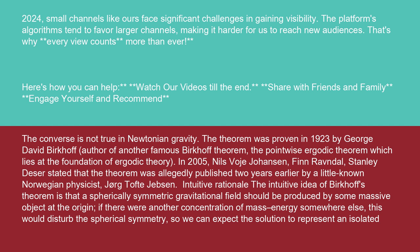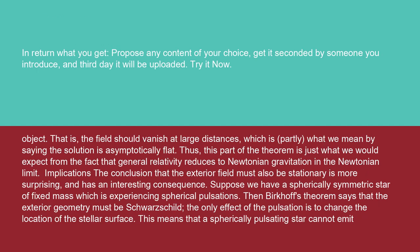The intuitive idea of Birkhoff's theorem is that a spherically symmetric gravitational field should be produced by some massive object at the origin. If there were another concentration of mass or energy somewhere else, this would disturb the spherical symmetry, so we can expect the solution to represent an isolated object. That is, the field should vanish at large distances, which is partly what we mean by saying the solution is asymptotically flat.